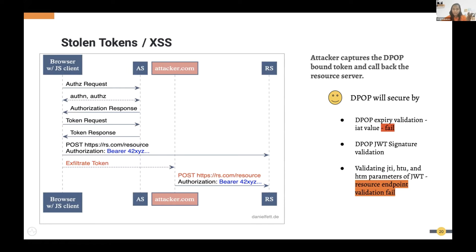The third attacker model is stolen access tokens. If an attacker steals an access token and tries to call the resource server directly with it, they can't use it — because the resource server introspects the token and finds that it is a DPoP-type access token. The DPoP proof must always be sent when working with DPoP tokens.